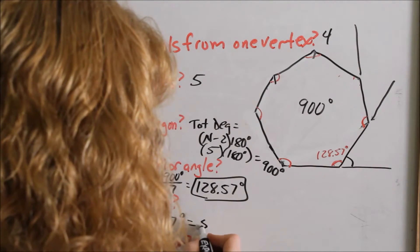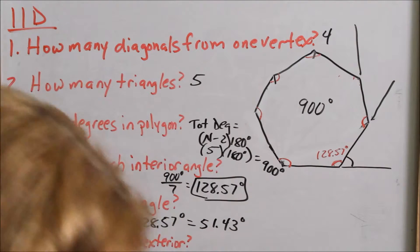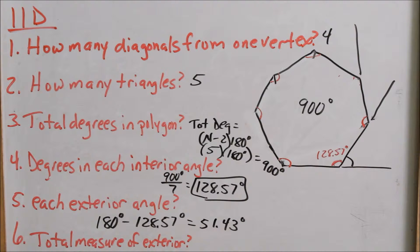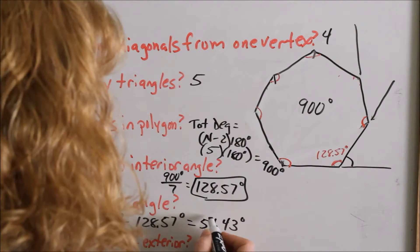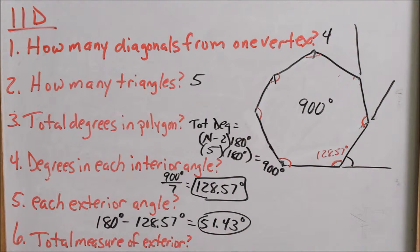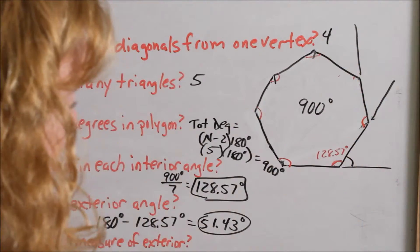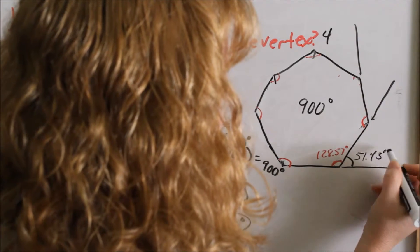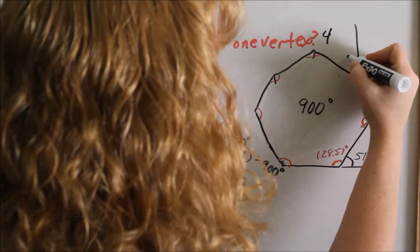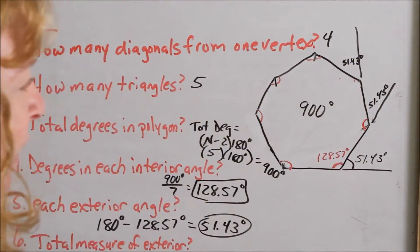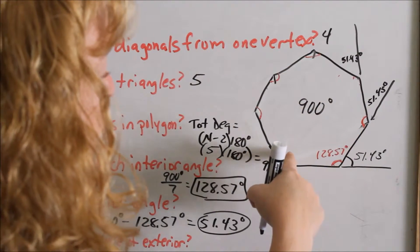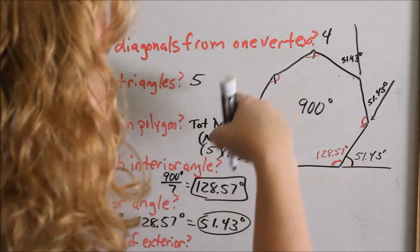So if this interior angle is 128.57 degrees, I can figure out the exterior angle because they're supplementary: 180 minus 128.57 gives an exterior angle of 51.43 degrees. Since every interior angle is congruent in a regular polygon, every exterior angle is also congruent — every exterior angle is 51.43 degrees. If there are seven interior angles, there are seven exterior angles.